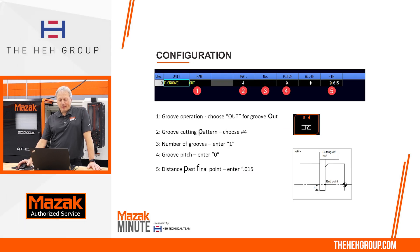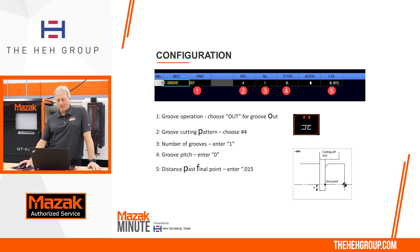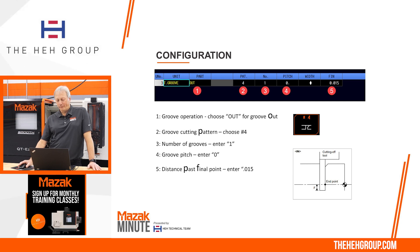If we look at the configuration when I call up a grooving operation, you're going to have T groove out, pattern number four. The number is the number of grooves you're making. When you're doing a cutoff operation there is only one groove. The pitch would be as if there were multiple grooves — that's going to be set to zero because there's one groove.